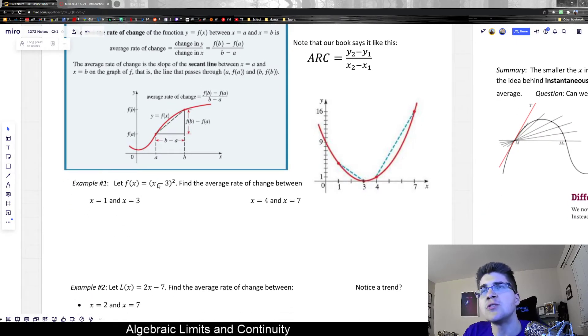Let's look at an example. It says, let f(x) be equal to (x - 3)². So this would be a polynomial. We could expand this, and that would look like x² - 6x + 9 if we foil that out.